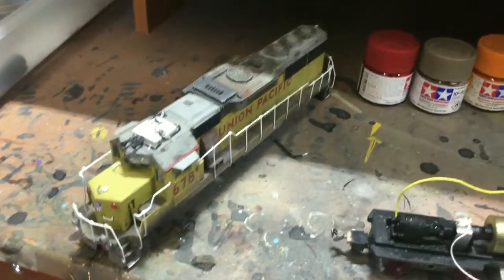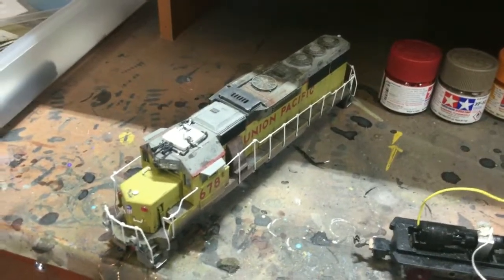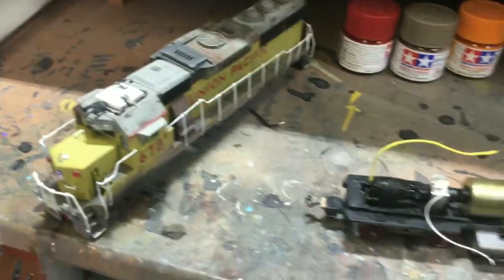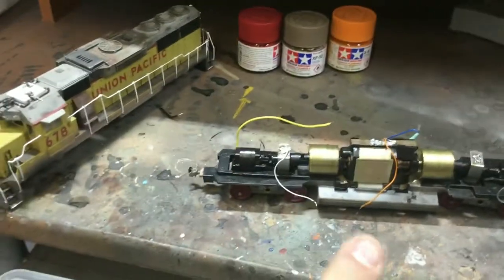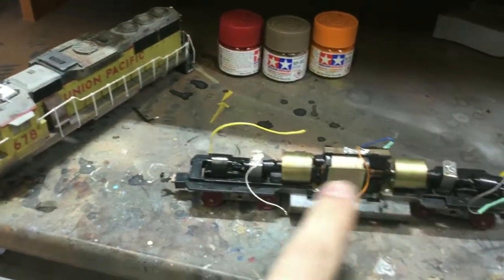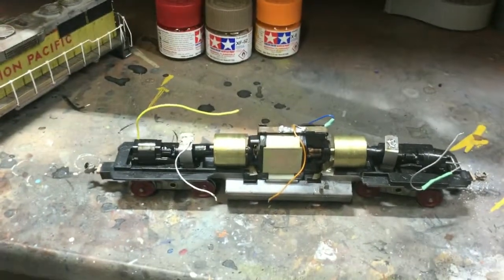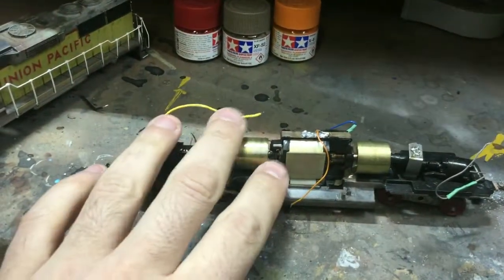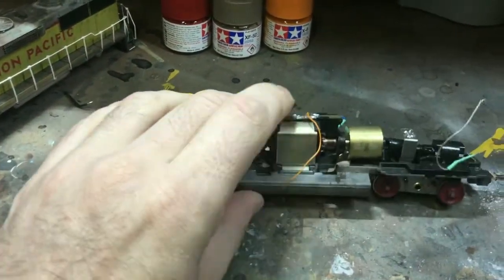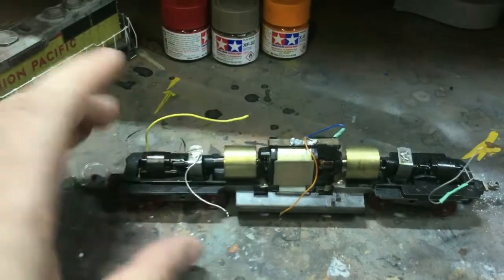Okay guys, I thought I'd show you one of my Athearn Blue Box locomotives. I'm going to strip this down - it had a chip previously in it, so it's been wired for DCC. I'm just going to do a tune and lube, clean up the commutator, and improve the wheel pickups to get it running better.